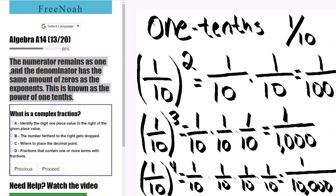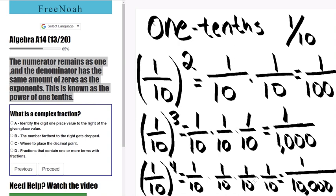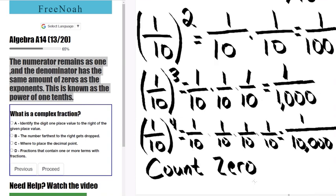Notice how as the power bumps up by one, one zero gets added to the denominator. So you're simply counting the zeros. Also, keep in mind that the one remains the same.